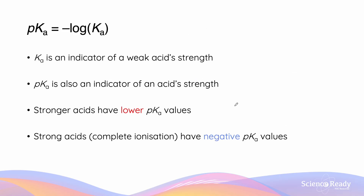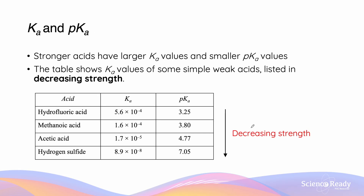pKa is the negative log of Ka. While Ka is an indicator of a weak acid's strength, pKa is also an indicator of acid strength. However, since Ka values can be exceptionally large or small, we use pKa to better quantify very small differences. A strong acid has a lower pKa value — in fact, strong acids will have negative pKa values. So strong acids have larger Ka and smaller pKa values.